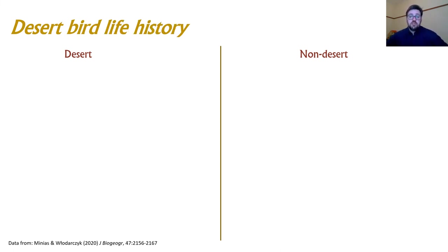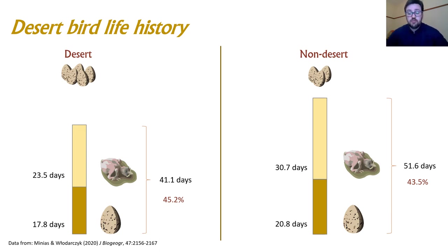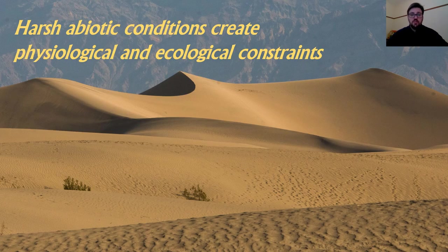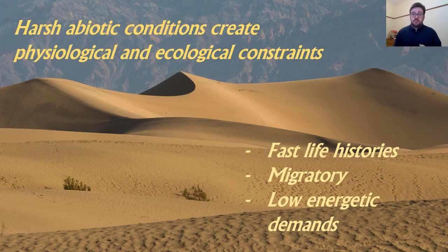We also compared life history traits and find that desert birds tend to have larger clutches than non-desert birds. They tend to have a shorter incubation period and a shorter fledging period, which together means they have about 10 days shorter average development time from egg-laying to fledging, with the difference more pronounced in the fledging period. Summing this up, the harsh abiotic conditions in the desert create physiological and ecological constraints which likely lead to habitat filtering, meaning desert birds tend to have faster life histories, tend to be migratory so they avoid harsh areas during the toughest seasons, and typically have lower energetic demands by breeding faster, eating less energetic food, and using less energetically demanding foraging methods.